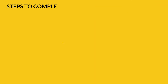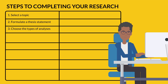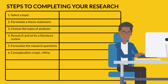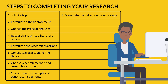Steps to completing your research: one, select the topic; two, formulate a thesis statement; three, choose the types of analyses; four, research and write a literature review; five, formulate the research questions; six, conceptualize a topic and refine the thesis; seven, choose research method and research instrument; eight, operationalize concepts and construct instruments; nine, formulate the data collection strategy.